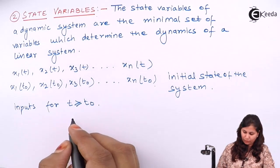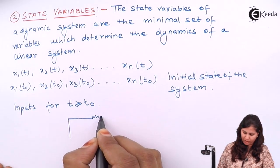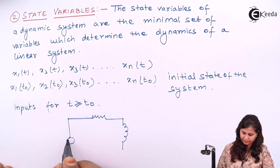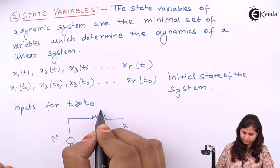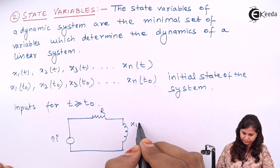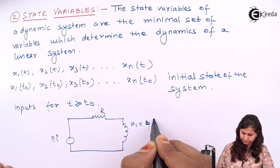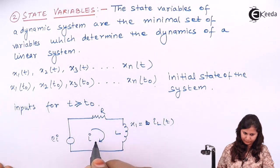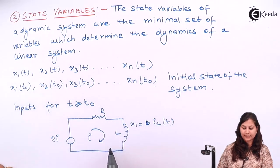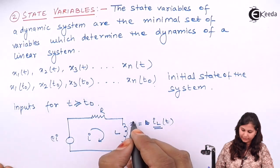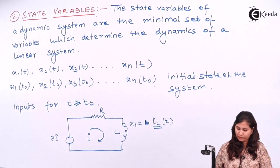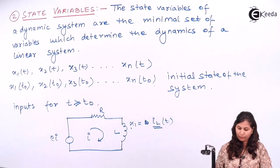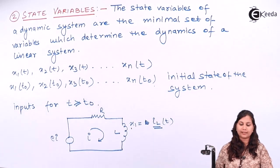As an example of an electrical network, consider a circuit with R and an inductor, with an input voltage. The current across this inductor can be taken as a state variable, and it will be denoted x1. This is how we choose and define the state variables in a system.